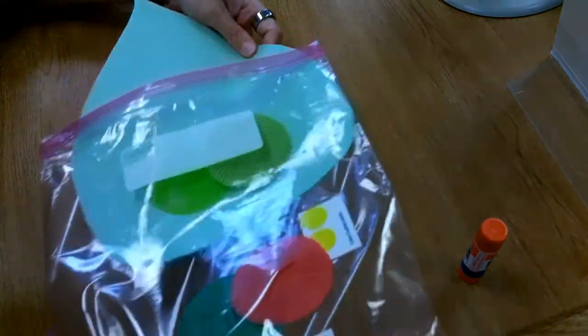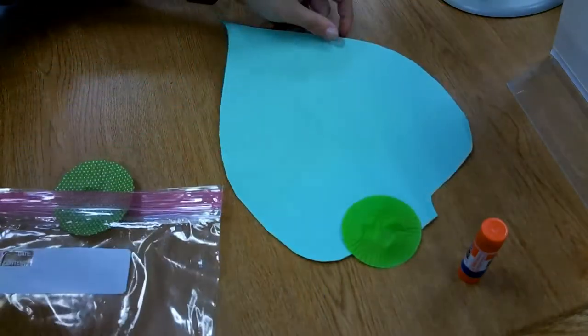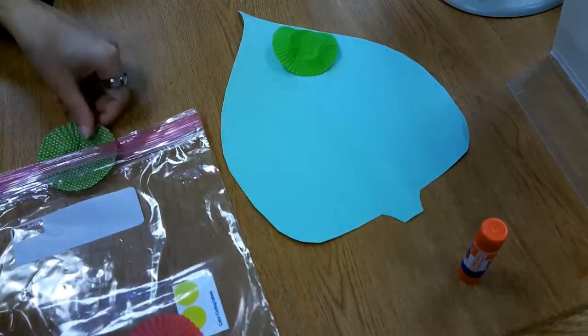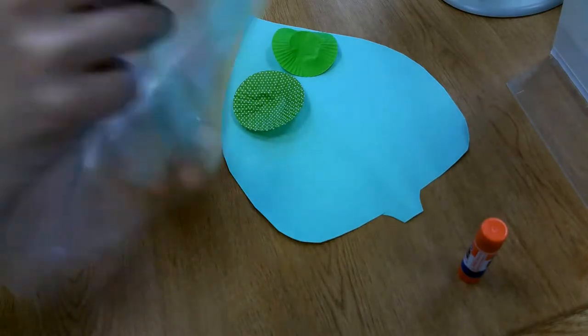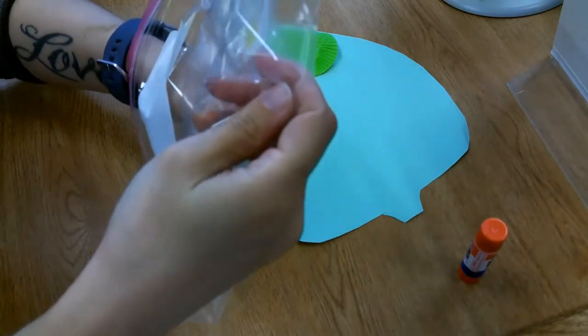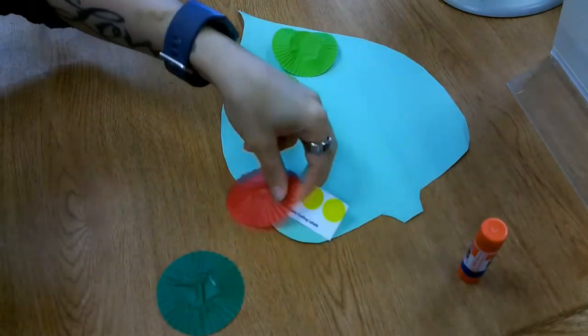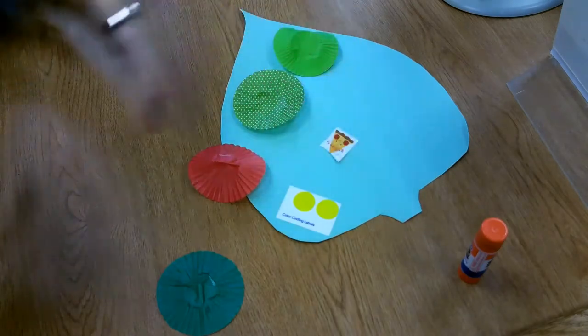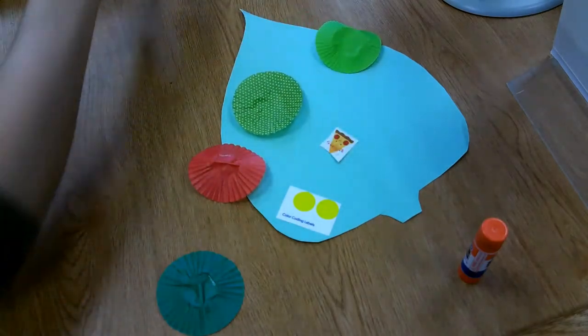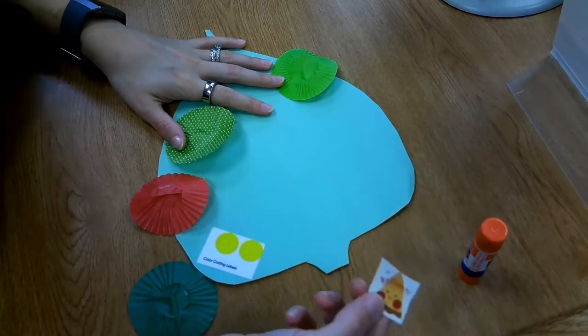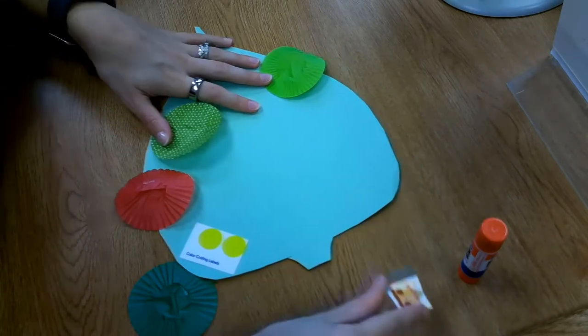We've got a big old leaf green piece of paper. We have some green cupcake liners, mini cupcake liners, and one red one. And then we have two yellow dots and a sticker. Now this sticker is scented, so that's kind of fun. It smells like food.